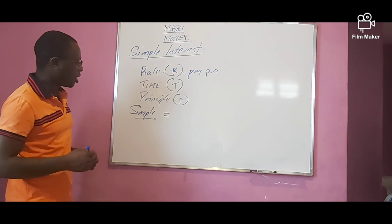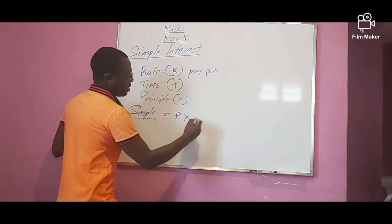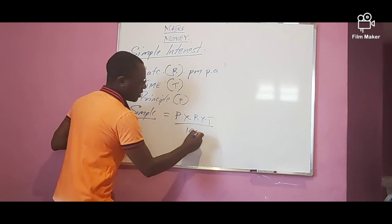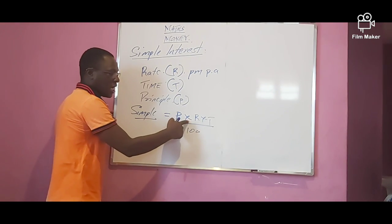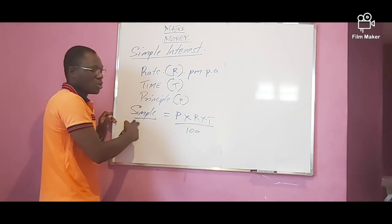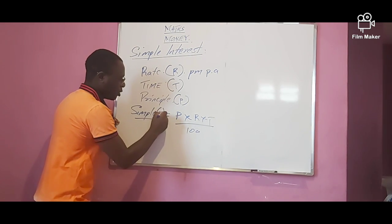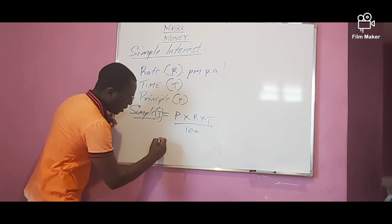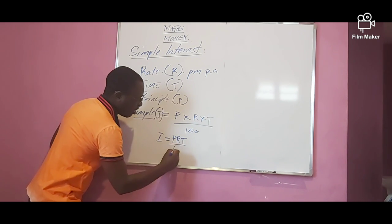The formula for simple interest is: principal times rate times time, over 100. This 100 is for the rate. So we have principal times rate times time over 100, and that equals simple interest, which we refer to as I. So: Interest equals PRT over 100.